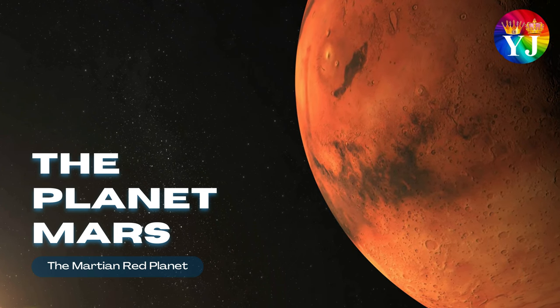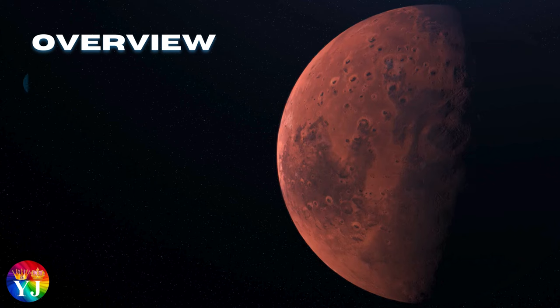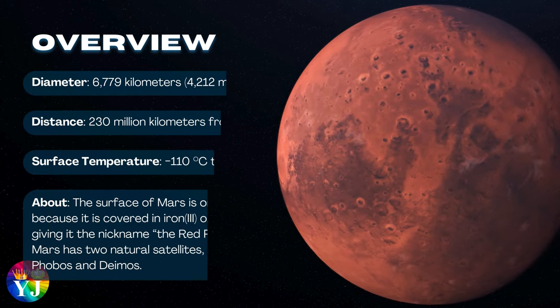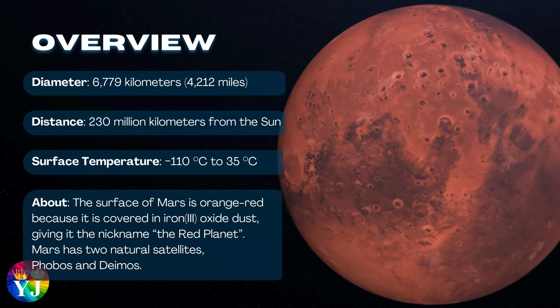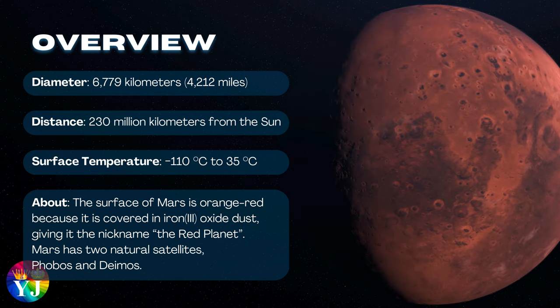The planet Mars, the Martian Red Planet. Overview of Mars: Diameter 6,779 kilometers, Distance 230 million kilometers from the Sun, Surface temperature minus 110 to 35 degrees Celsius.